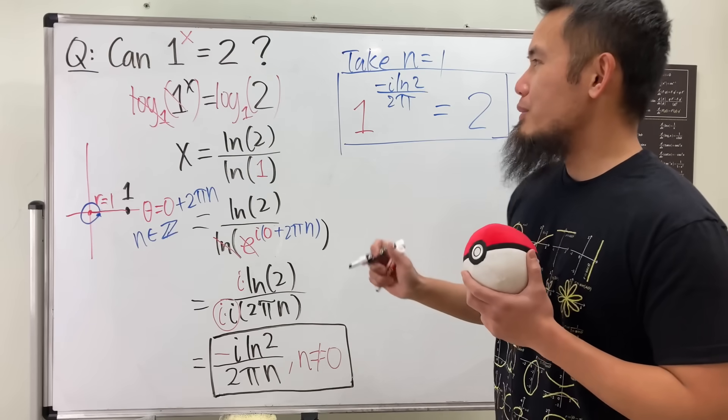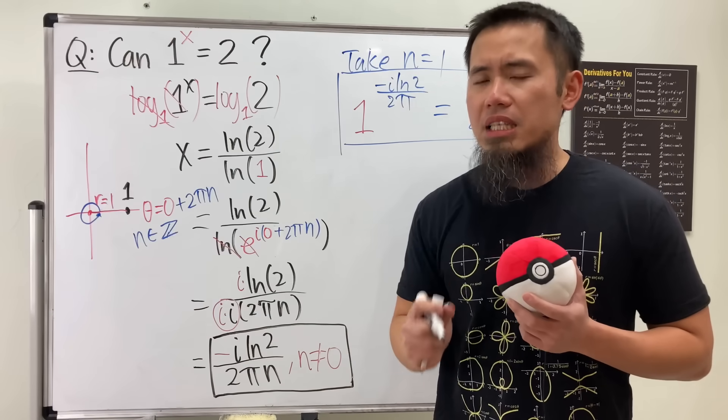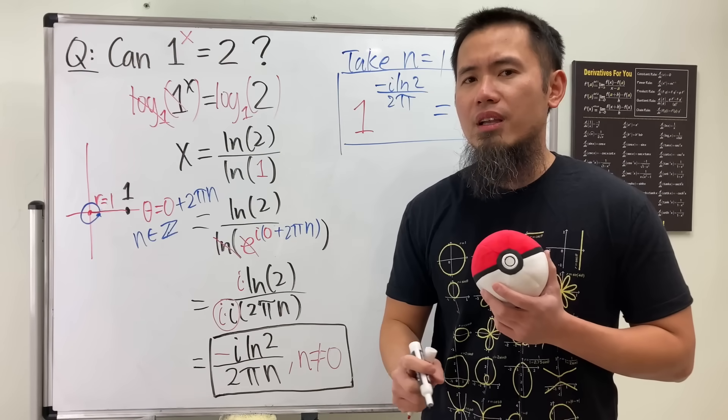But before we end, I wanted to talk about: you see, 1 to the x power is equal to 2. On WolframAlpha, it does not give you any solution.